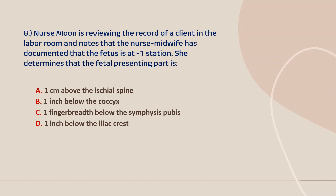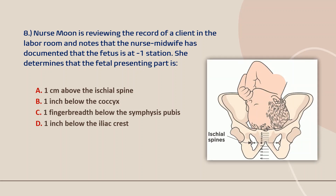Finally, question number eight. Nurse Moon is reviewing the record of a client in the labor room and notes that the nurse midwife has documented that the fetus is at negative one station. She determines the location of the fetal presenting part. The fetal presenting part is the relationship of the presenting part to an imaginary line drawn between the ischial spines, measured in centimeters — noted as a negative number above the line and a positive number below the line. At negative one station, the fetal presenting part is one centimeter above the ischial spines. Therefore, the correct answer is letter A.